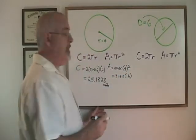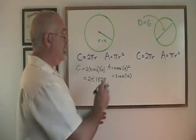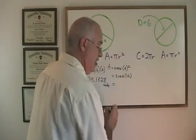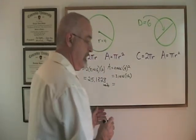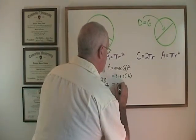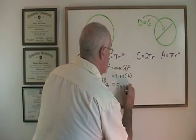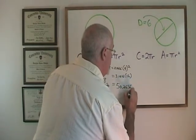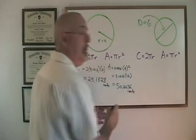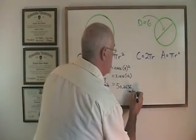So therefore I have 3.1416 times 16. And my answer is 50.2656 units. And because this is area, it will be units squared.